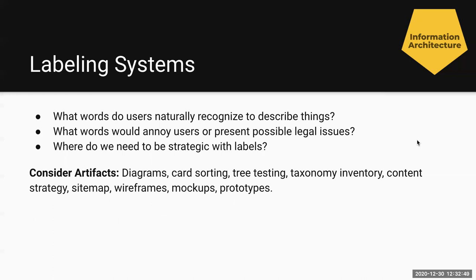Labeling systems — the words you choose to use — should not just come from an internal team unless only the internal team is using something. These labels need to mean something to an audience. What are their mental models? What words do your users naturally recognize to describe things? What words would annoy them or present possible legal issues? Are there certain off-limit things? And where do we need to be strategic with labels — in the menu system, in search, in search results, or on the item page itself? Artifacts can help define these labeling systems: diagrams, card sorting, tree testing, taxonomy inventory, content strategy, site map, wireframes, mock-ups, and prototypes.